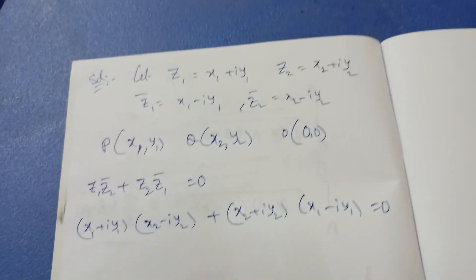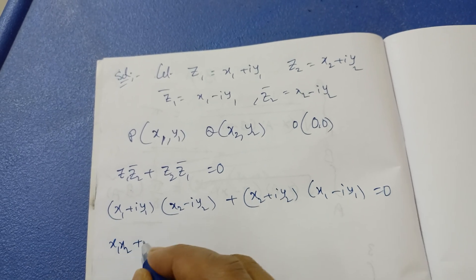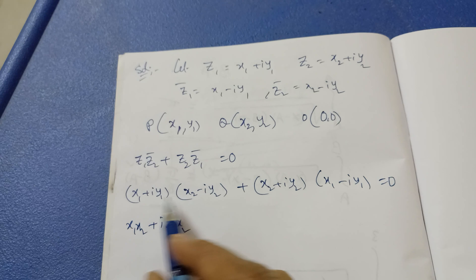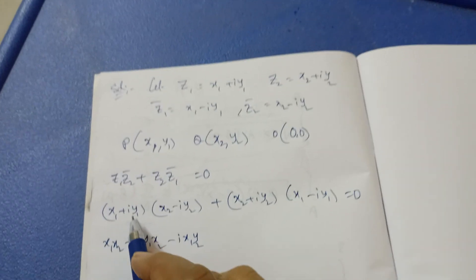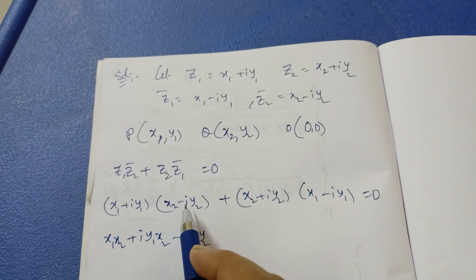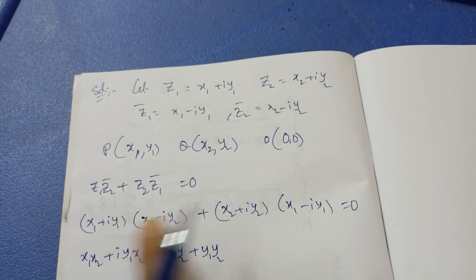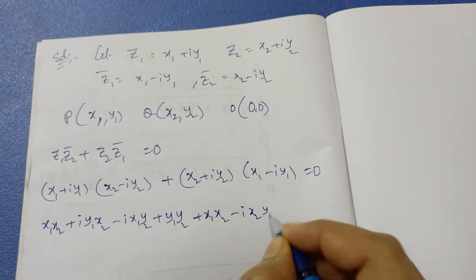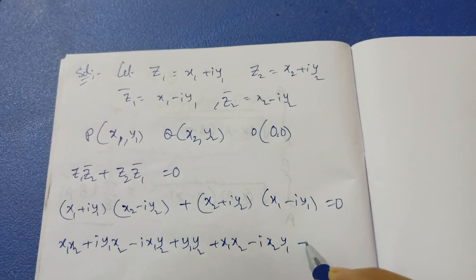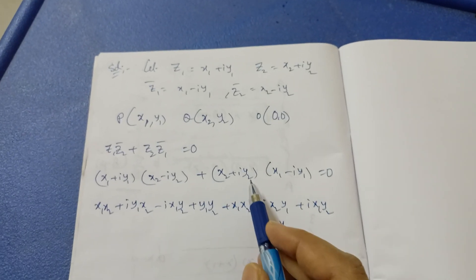Multiplying out: (x1 + iy1)(x2 − iy2) + (x1 − iy1)(x2 + iy2). Expanding the first product gives x1·x2 + y1·x2·i − x1·y2·i − i²·y1·y2. Since i² = −1, the last term becomes +y1·y2. The second product gives similar terms.